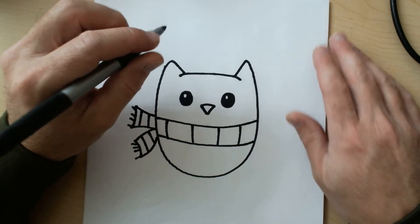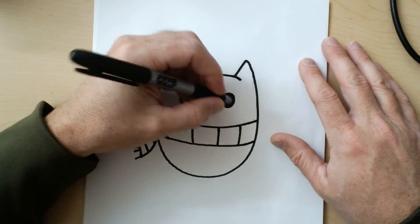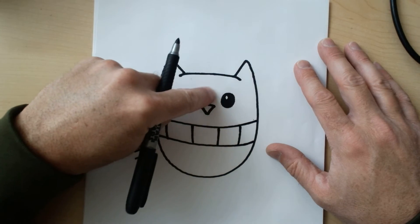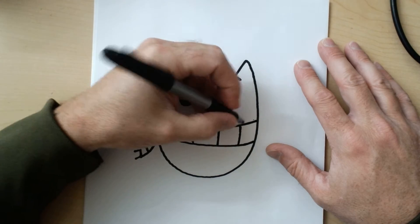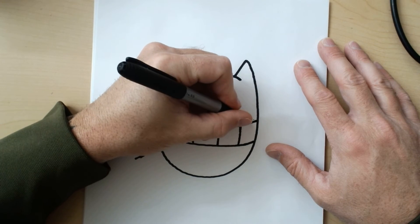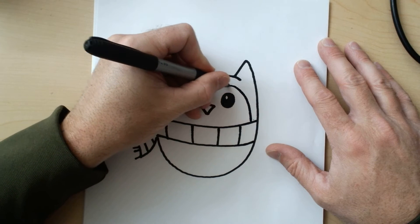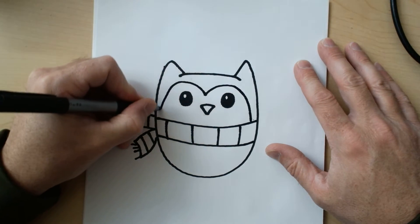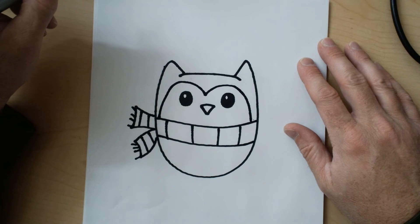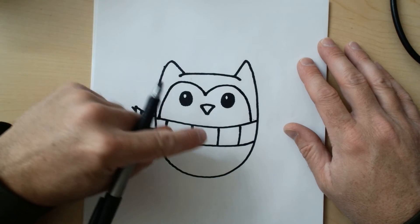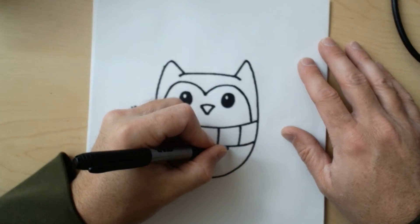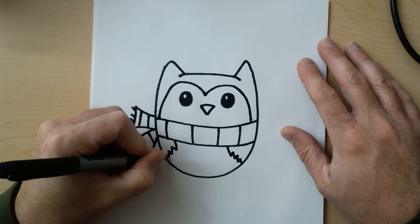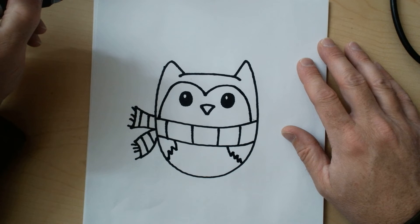Next, I'm gonna go around these eyes with a line like this. On the bottom, I'm gonna make kind of a zigzag on both sides because his wings are down.